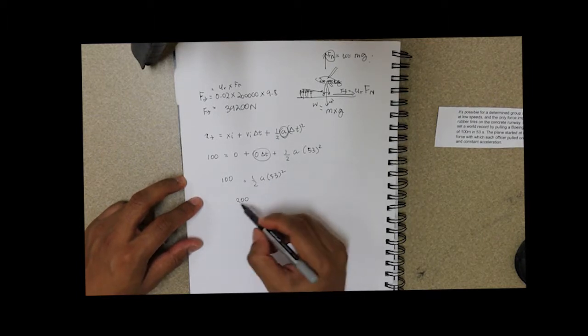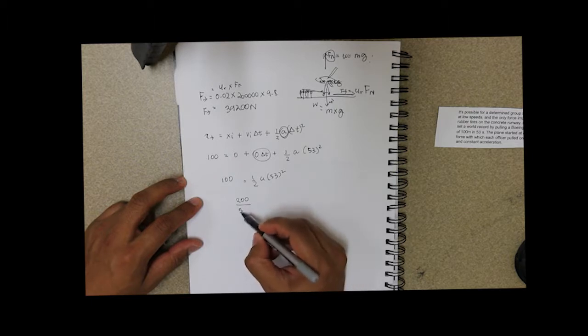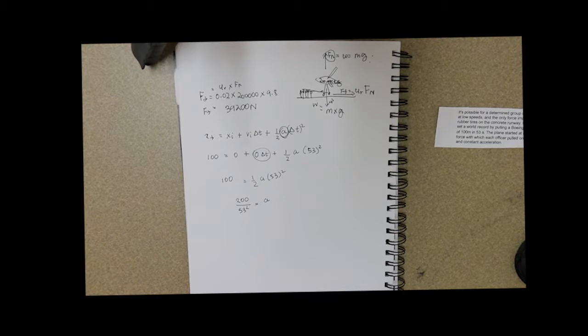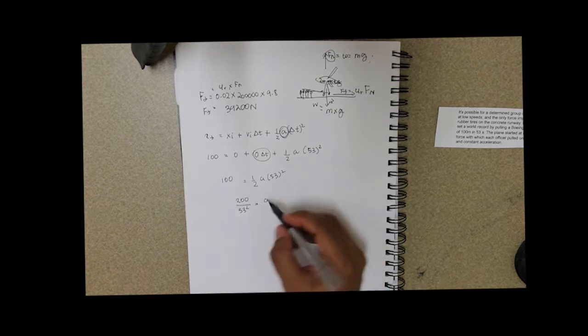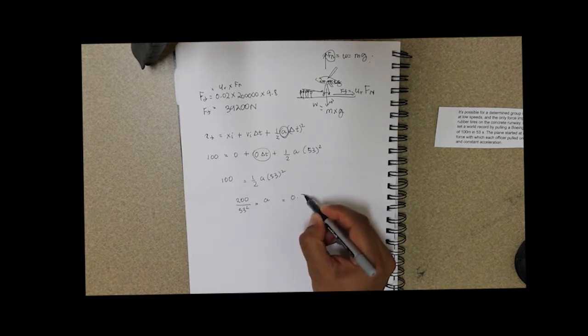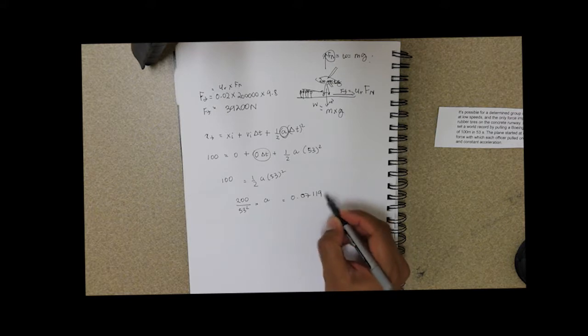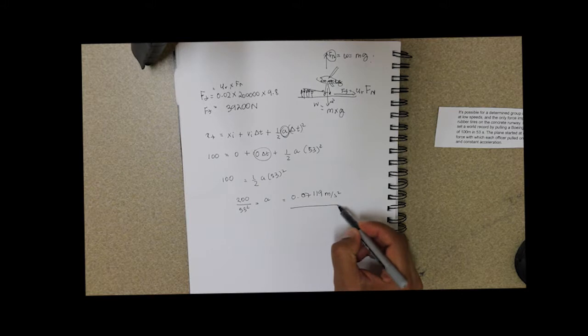So 200 divided by 53 squared equals the acceleration. So we do that calculation, and what we end up with is, our acceleration is 0.07119 meters per second squared.